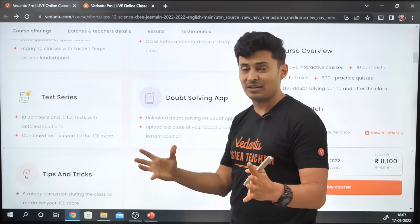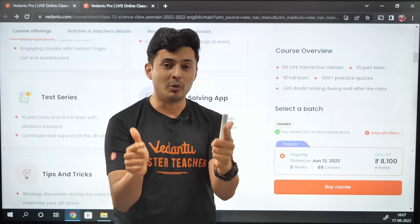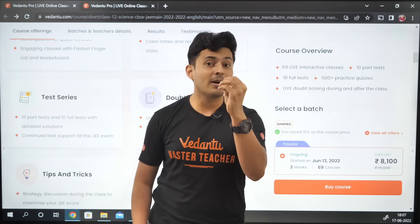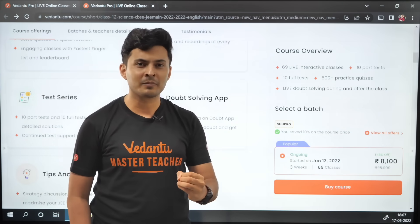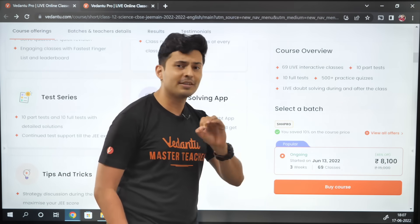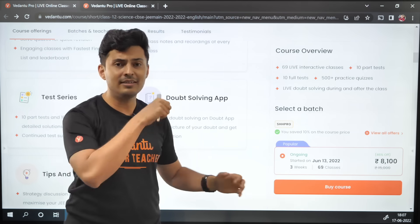Also there is in class doubt support and also outside the class doubt support with test series, with tips and tricks sessions. These sessions with all the tricks that you're learning over here is the best combo for boosting your score in the last few weeks. Make sure that you are a part of this revolution, don't miss out this chance because it's hardly priced at 8100 rupees after you use my discount coupon code SHHPRO.